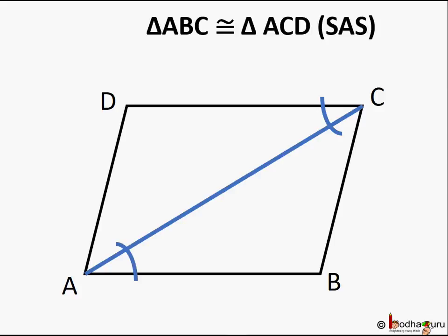As transversal AC intersects AD and BC line pair, and alternate angles are equal, so AD is parallel to BC. Hence ABCD is a parallelogram because opposite sides are parallel.